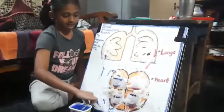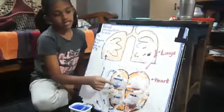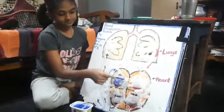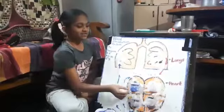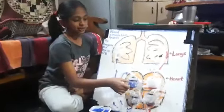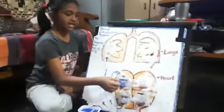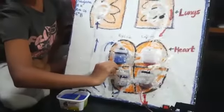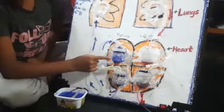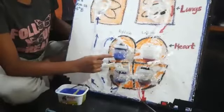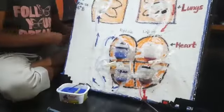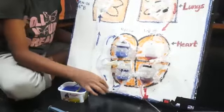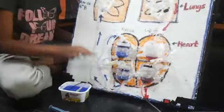This blood first enters the upper chamber of our right side of the heart. When sufficient amount of blood is accumulated in the upper chamber, the valve between two chambers opens. And the blood flows from the upper chamber to the lower chamber and acts like a blood pump and pumps the blood again to the lungs.